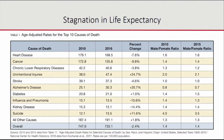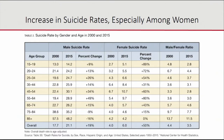Even though unintentional injuries and suicide are relatively far down the list from cancer and heart disease, they can have a big effect on life expectancy because of the age at which people are passing away. One thing that really caught our attention was suicide. It is true that men are much more likely to commit suicide than women, but that gap has been falling over time.